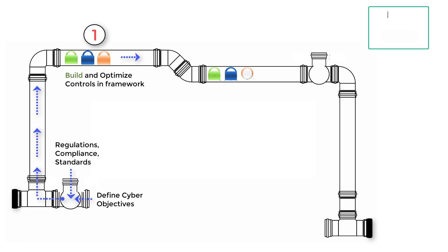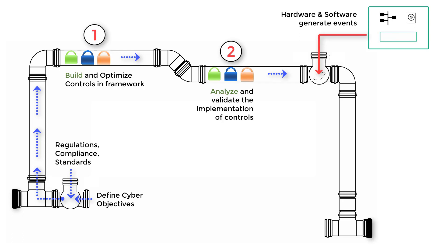Step two is to validate the implementation of the control within your environment. The objective of the control — for example, access control or encryption — are pretty standard. We need to encrypt data and implement access control to secure our environment from unwanted guests. But the implementation of that control will vary depending on the hardware, software, operating system, and your own requirements.